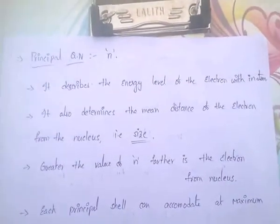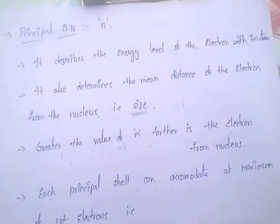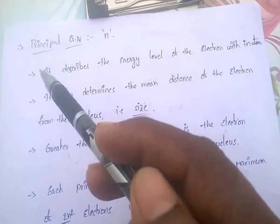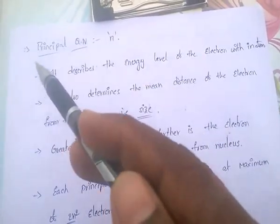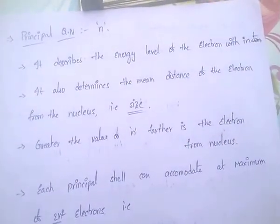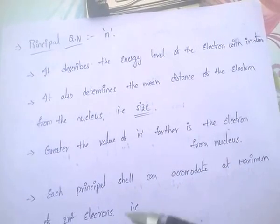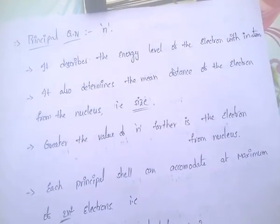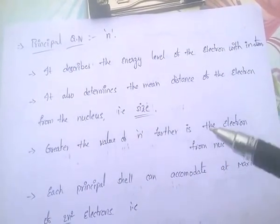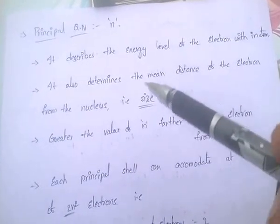First one: Principal Quantum Number. The principal quantum number is denoted by small n. This principal quantum number describes the energy level of the electron within the atom. It also determines the mean distance of the electron from the nucleus — that is, the size. So the principal quantum number describes the size of the atom.